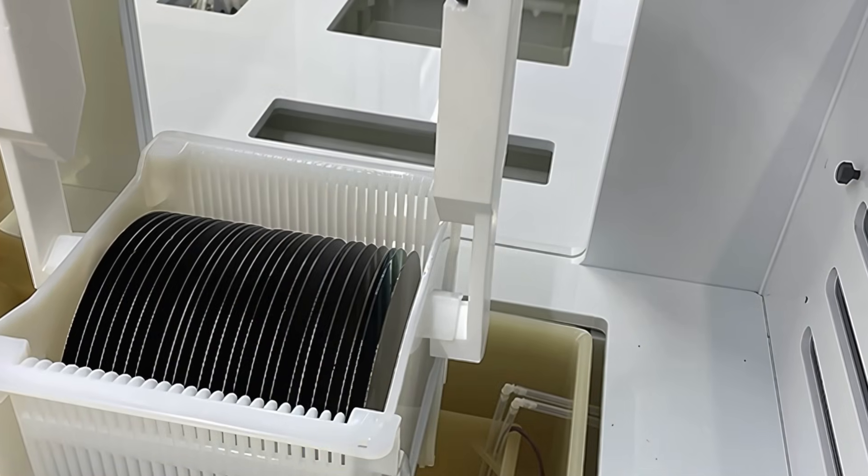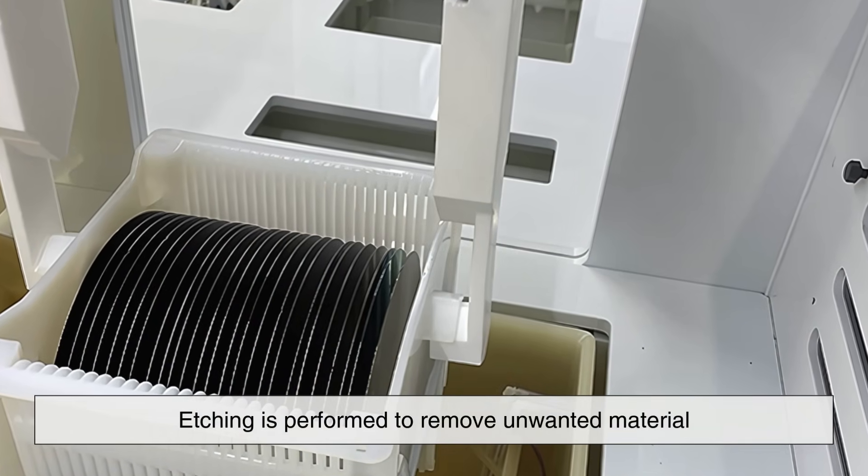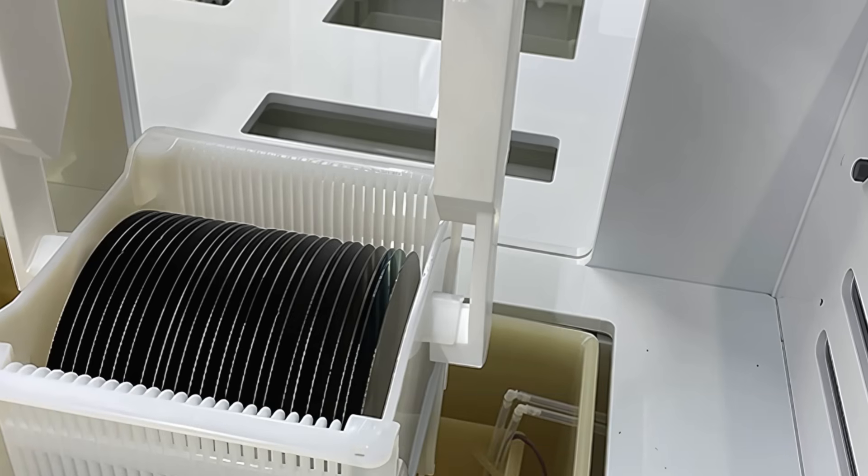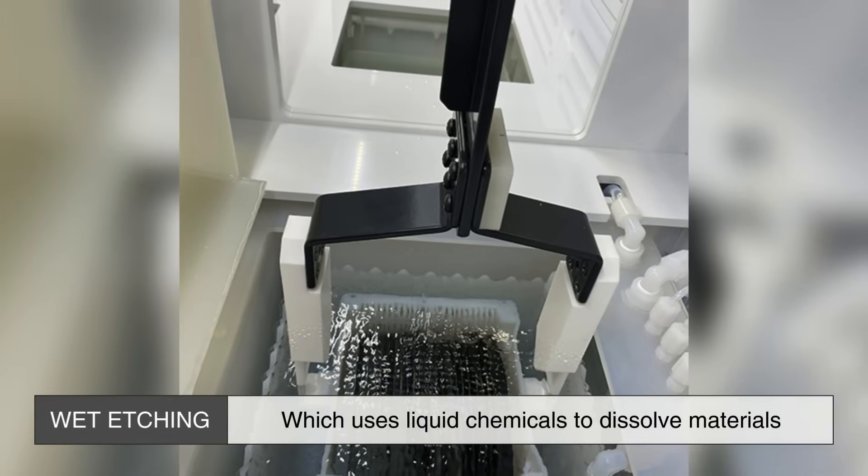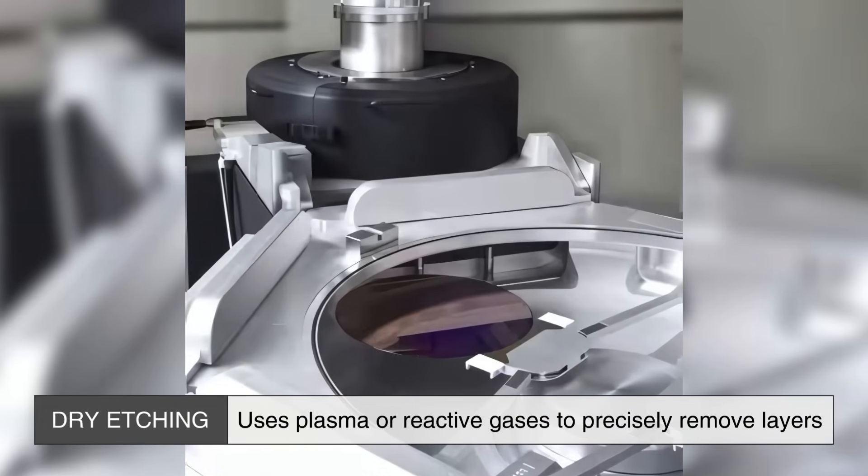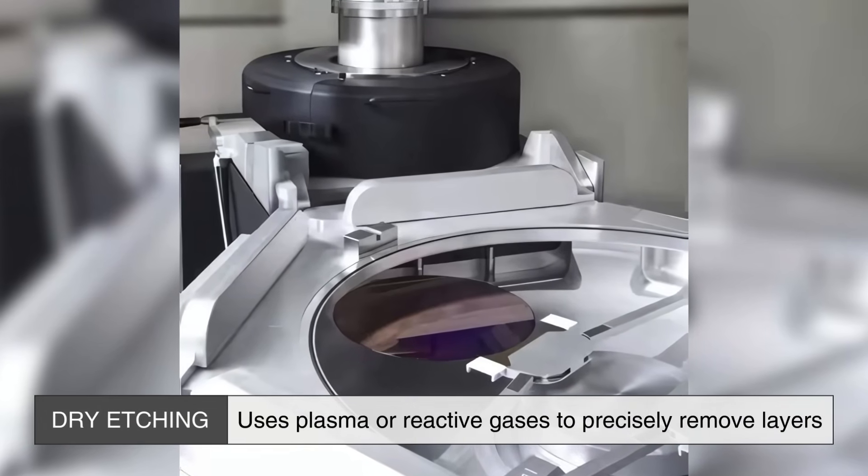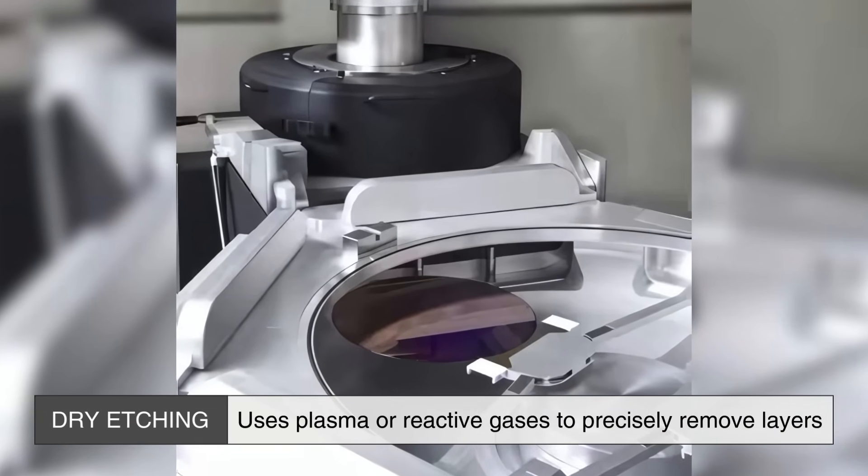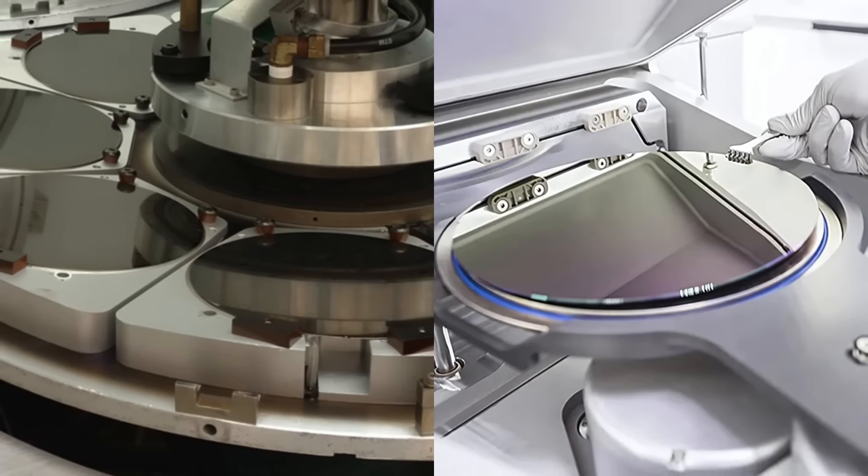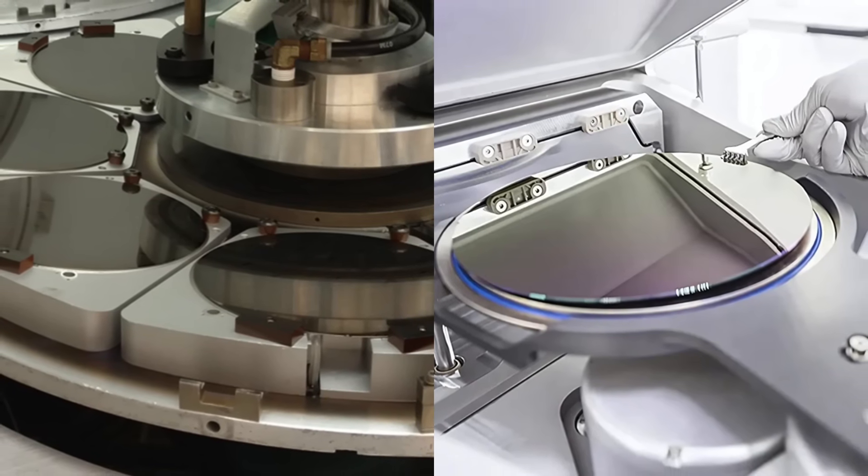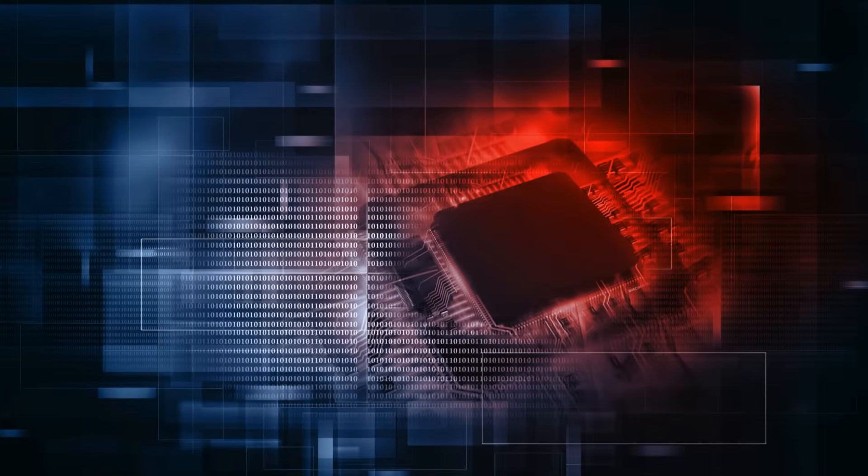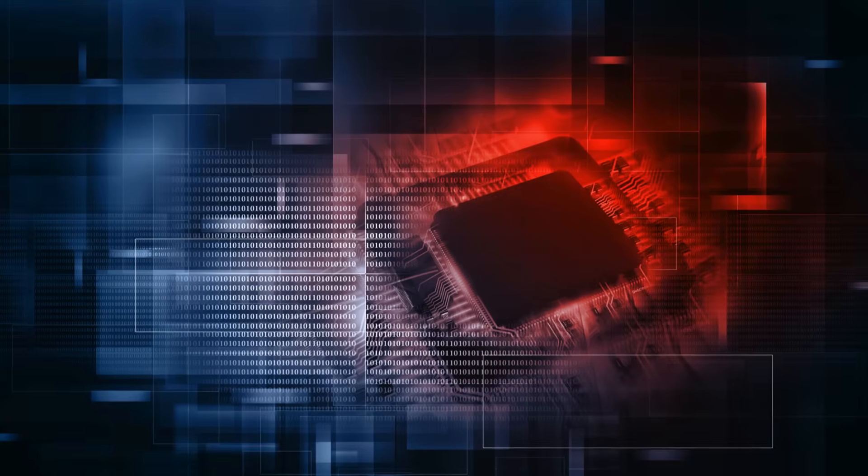Once doping is complete, etching is performed to remove unwanted material. There are two main types of etching: wet etching, which uses liquid chemicals to dissolve materials, and dry etching, which uses plasma or reactive gases to precisely remove layers. The combination of doping and etching defines the fundamental electronic properties of the transistors that will eventually form the functional parts of the semiconductor chip.